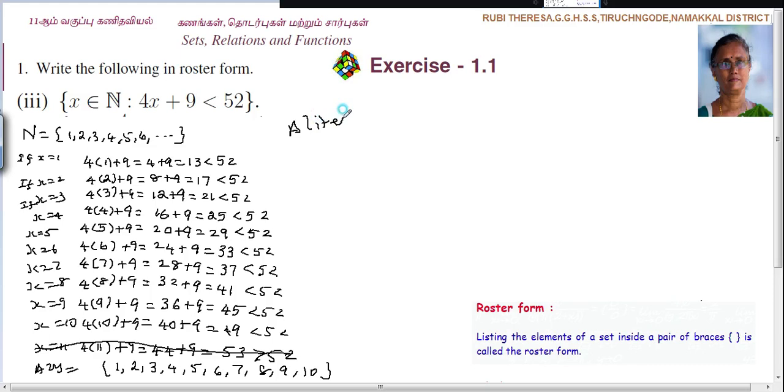Then alternate method. 4x plus 9 is less than 52. So 4x is less than 43. So x is less than 43 divided by 4. So 43 is divided by 4. 1, 4 is 4. Then you are bringing down 3. It is not divisible by 4, so 0. Keeping point and adding 1, 0.